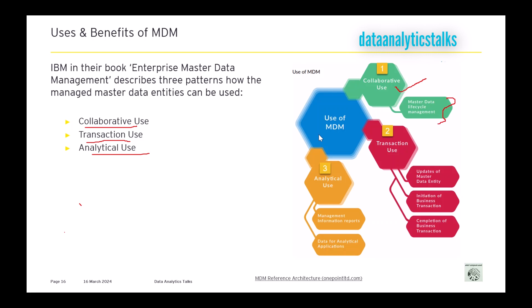Then there is transaction use. Transaction systems like order systems and payment systems need quick access to master data and quick updates of master data entities in order to initiate and complete business transactions. If there is a change, it should be quickly reflected so that the transaction can be completed quickly.